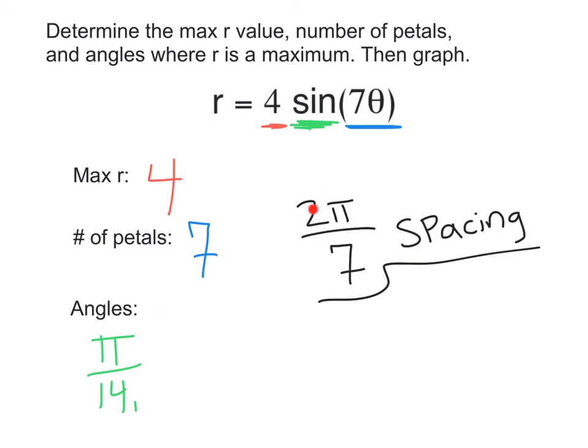Then, we need to know our spacing. If we take two pi, one revolution, divided by the number of petals, we see that we get a two pi over seven spacing. This is what we're going to add to our starting point all the way until we get all seven of our petals. Just to help me with my addition, I went ahead and changed this to common denominators with my starting angle, which is four pi over 14.